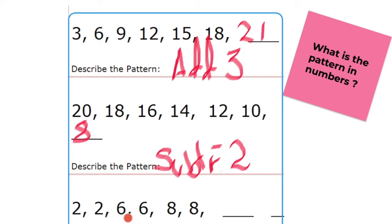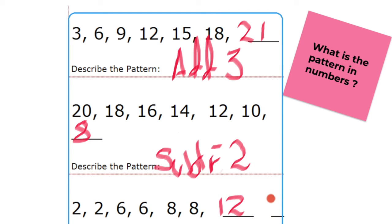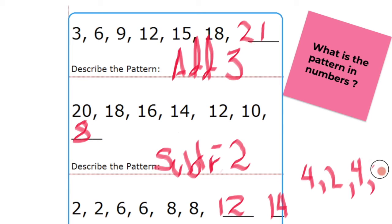Next exercise: 2, 6, 8... From 2 to 6 that's plus 4, then from 6 to 8 is plus 2, so the next step would give us 12 — adding 4 — and then 14 — adding only 2. The pattern here alternates: plus 4, then plus 2, repeating as 4, 2, 4.